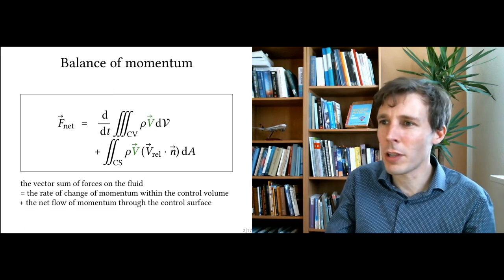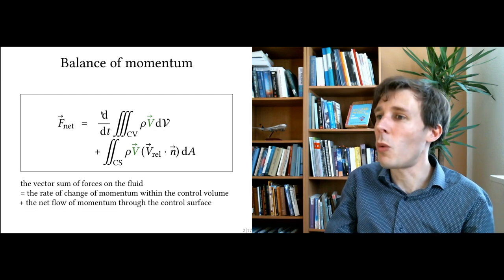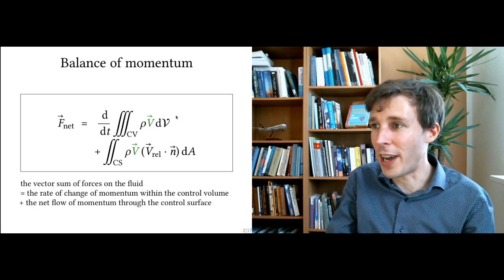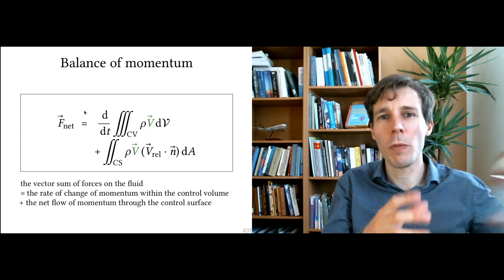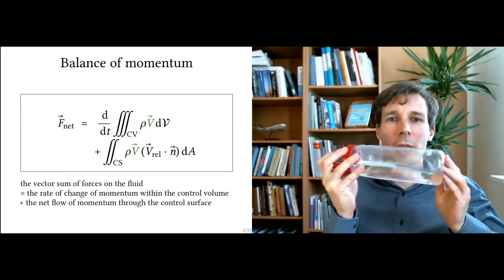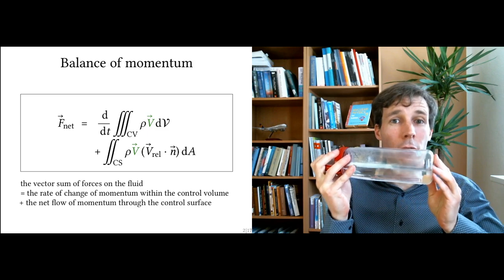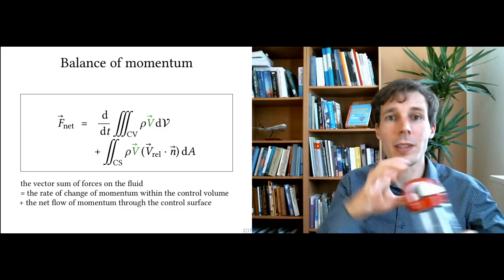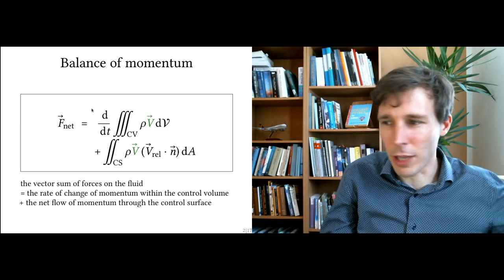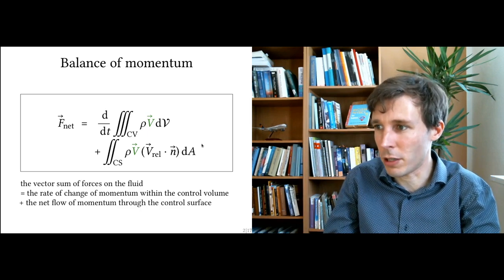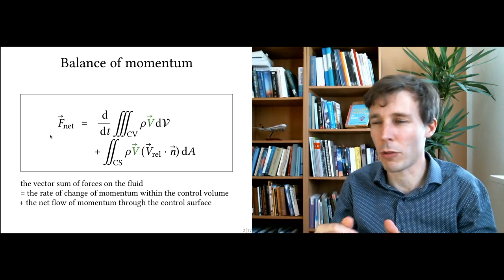This allows us to compute the net force as a function of two terms. One is the change in time of the momentum inside the control volume — for example, the change of momentum due to the sloshing back and forth of water inside the tank inside the control volume. The second term is the net sum of the momentum flows coming in and out of the control volume.